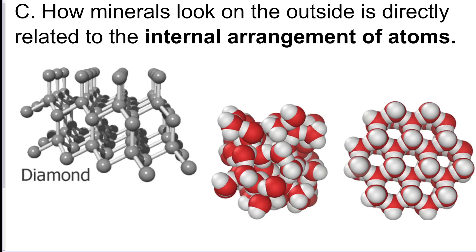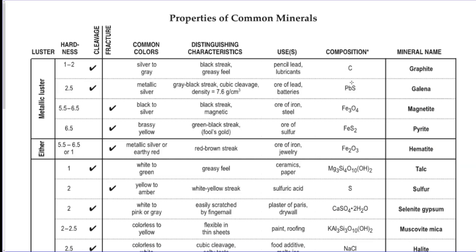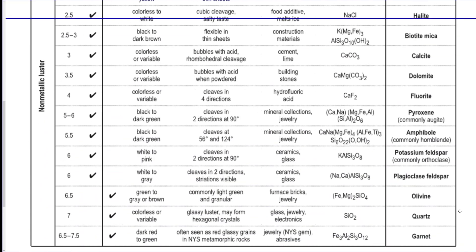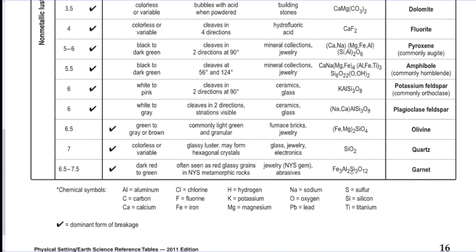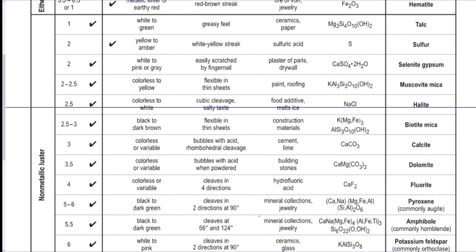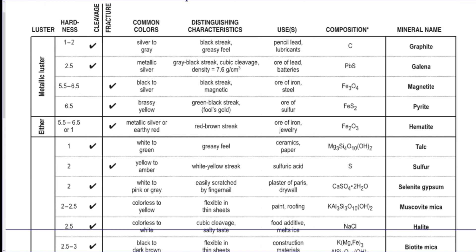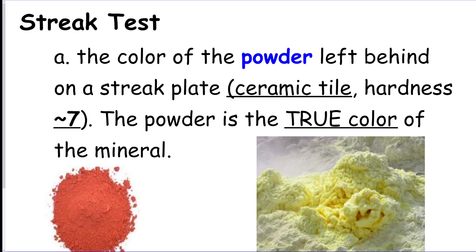The internal arrangement of atoms gives all the physical properties of the mineral — shape, hardness, breakage pattern, anything physical. You need to know how to read the mineral chart, which shows chemical formulas like SiO₂ for quartz as a silicate, with elements listed at the bottom. For a tutorial on reading that chart, check out the minerals video.